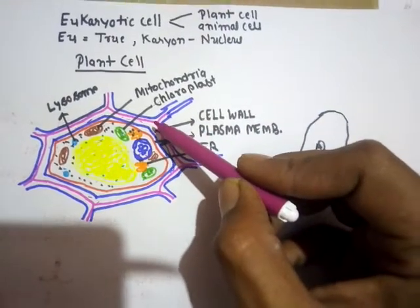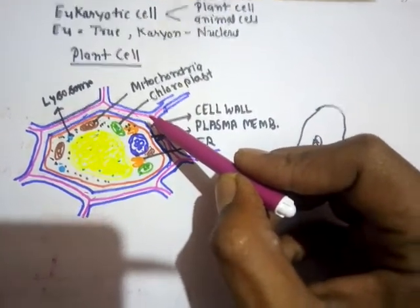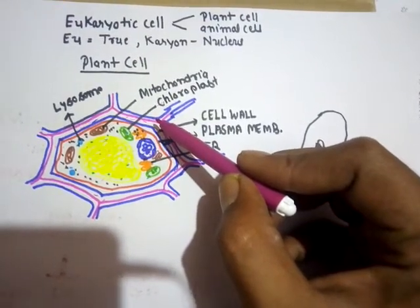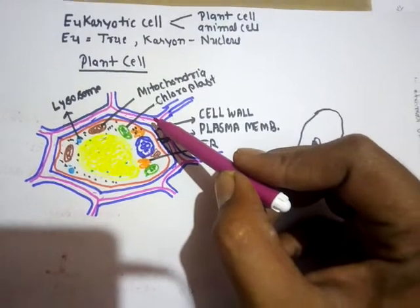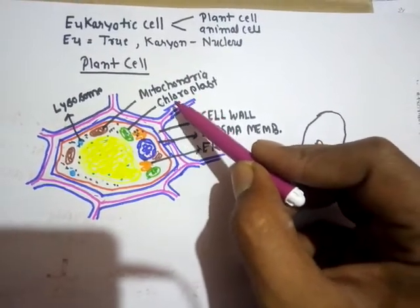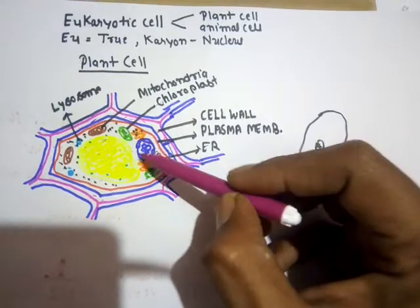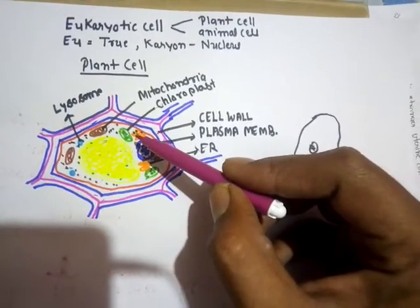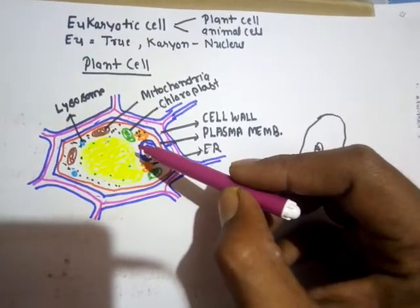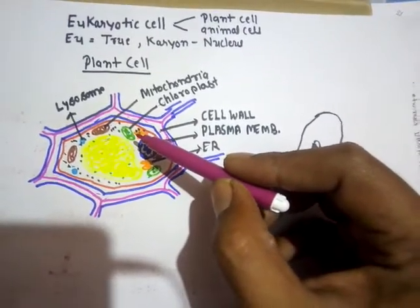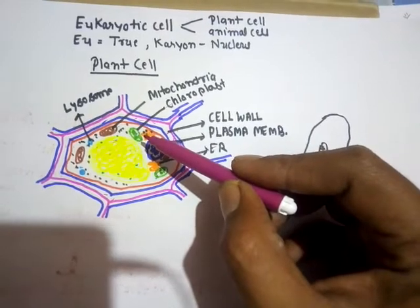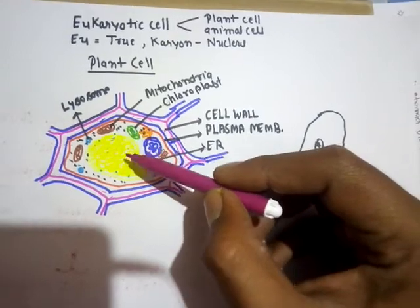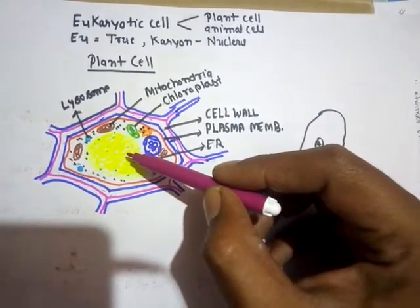The second membrane-bound organelle present in plant cells is called plastids. Plastids are of three types: chromoplasts, which are colorful plastids; leucoplasts, which are white; and chloroplasts, which are green because they contain a pigment called chlorophyll. These chloroplasts are responsible for performing the process of photosynthesis, in which the plant produces glucose that is stored in the food vacuole in the form of starch.